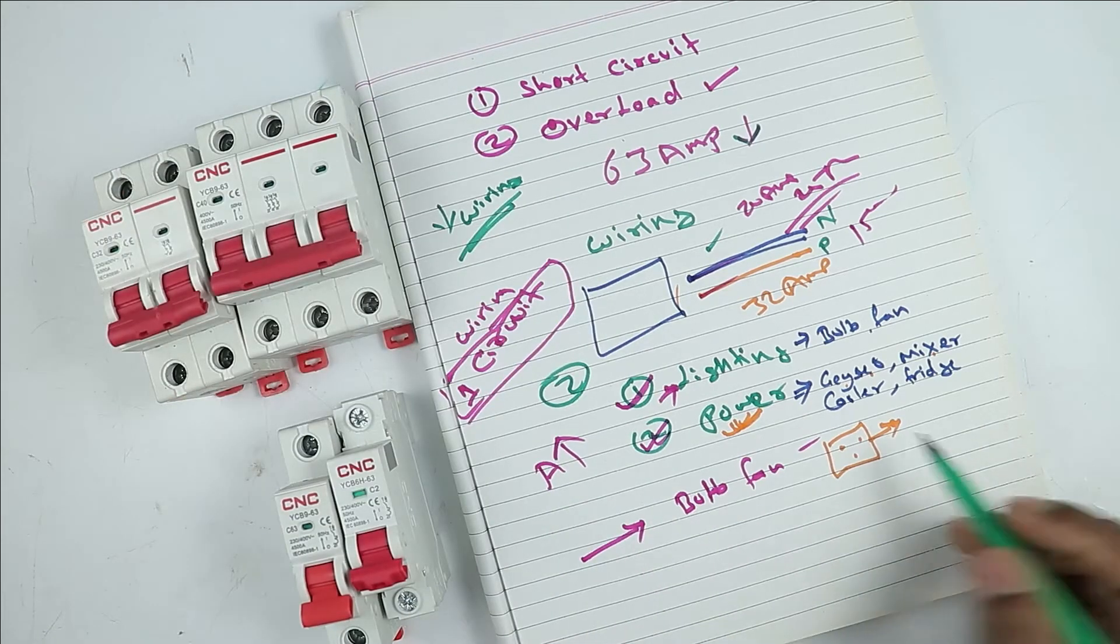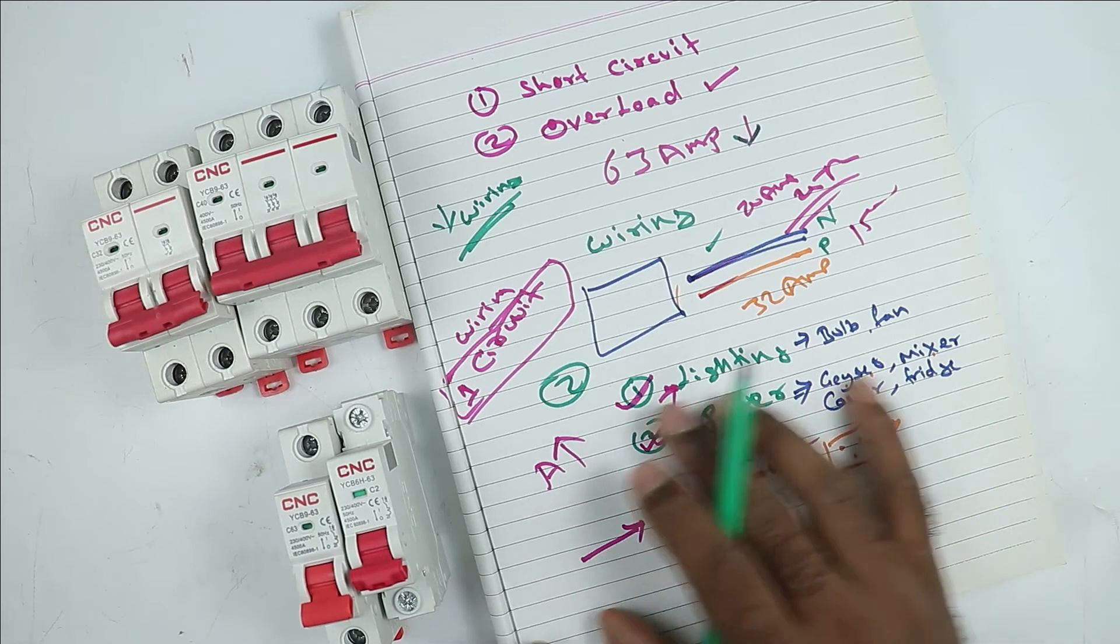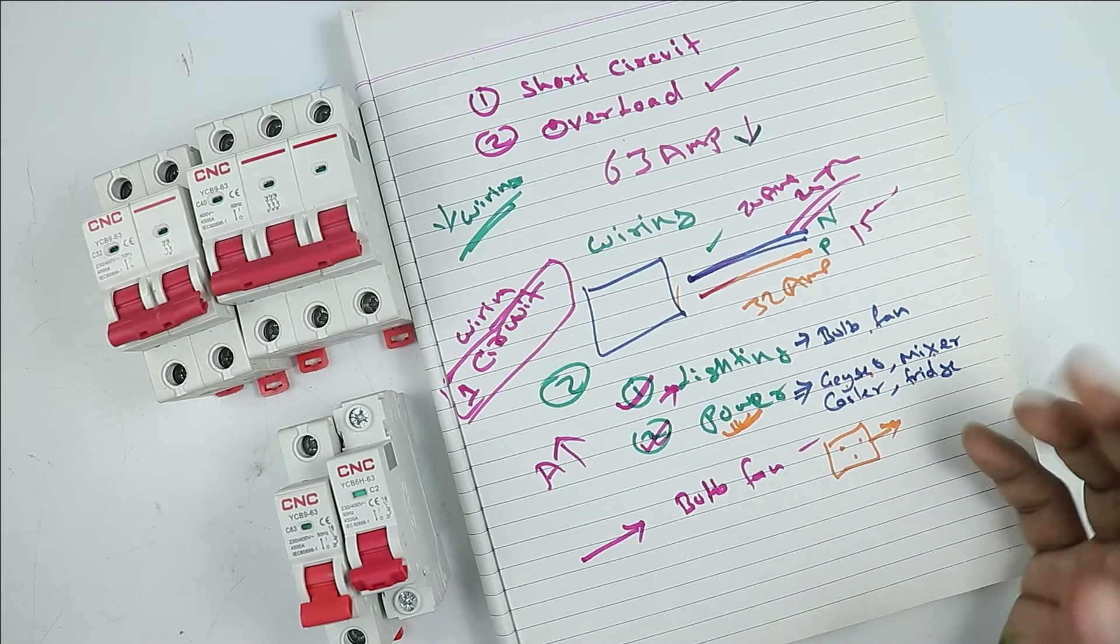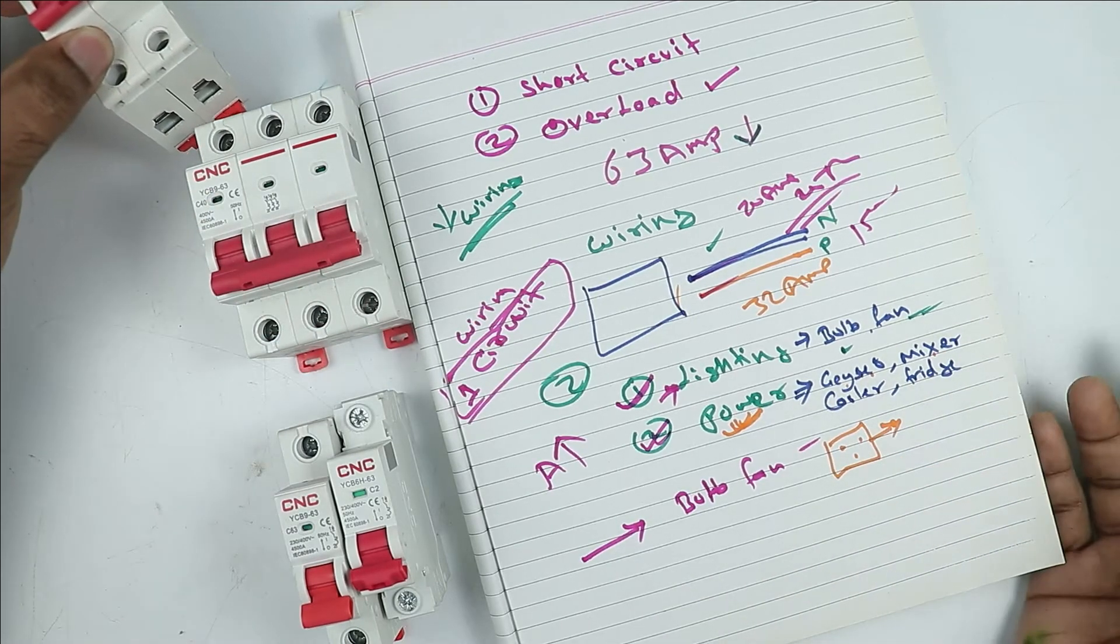But as we know, devices in our home like geyser, cooler, mixer, refrigerator, not always used. Only sometimes we need to turn on and off these devices. So these devices are turned on and off only sometimes.